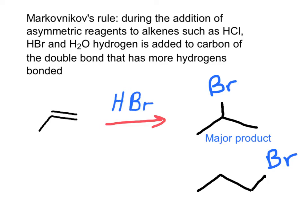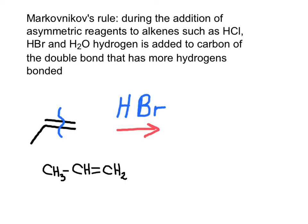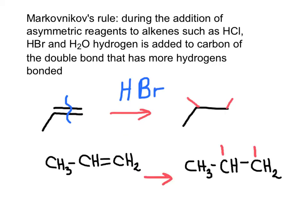According to Markovnikov, the bromine will add to the carbon that has fewer hydrogens, and this will be the major product. When working problems, if you still need to show the hydrogens, rewrite the molecule showing how many hydrogens are bonded to the carbon-carbon double bond. The next step is to break the double bond, then rewrite the molecule and add two new bonds to the carbons where the double bond was.